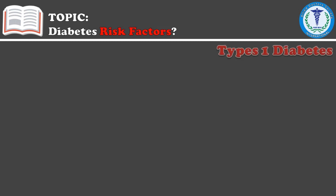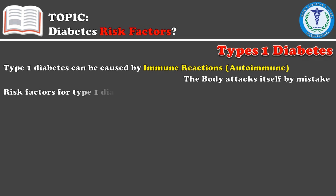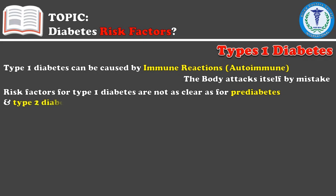First, let's learn about type 1 diabetes. The main cause of type 1 diabetes is immune cells that attack the body itself. So far, no complete research has come out about the risks involved in having type 1 diabetes.